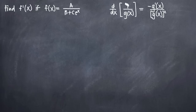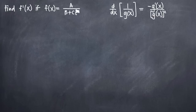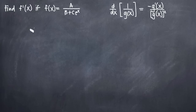The reciprocal rule formula is somewhat limiting because it only gives us the formula when we have a value of 1 in our numerator. In our case, we have a value of a in our numerator, which is not 1. In our function, a, b, and c are all to be treated as constants, but we don't know that a is equal to 1. So, let's go ahead and use the quotient rule formula to derive the reciprocal rule formula, so that we can come up with a formula that will allow us to take the derivative of our function f of x.